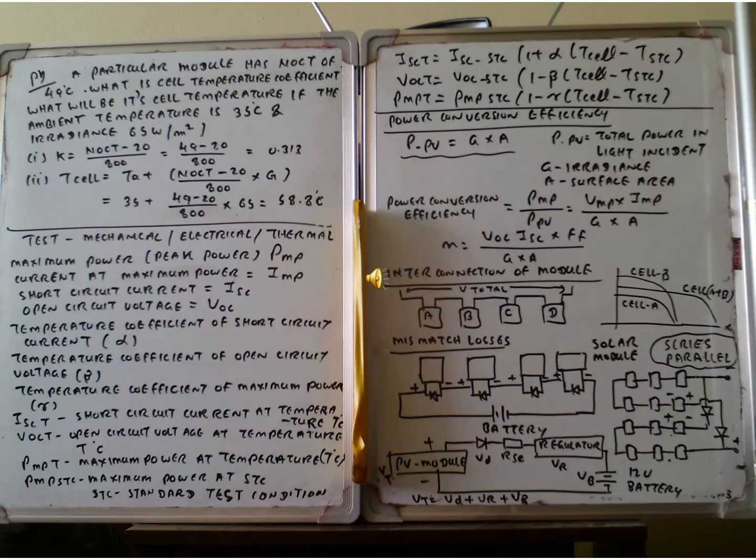The power conversion efficiency, we write down the equation. Power conversion efficiency equal to PMP divided by PPV. So PMP is VMP multiplied by IMP. The PPV is G multiplied by A. Efficiency n is equal to VOC times ISC times fill factor divided by G multiply A. So in this case, VOC is the open circuit voltage and ISC is the short circuit current of the solar cell, FF is the fill factor, G is the irradiance, and A is the surface area.